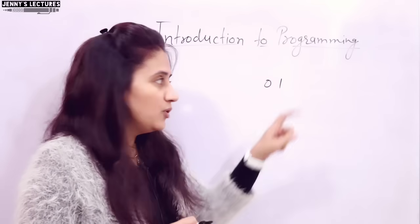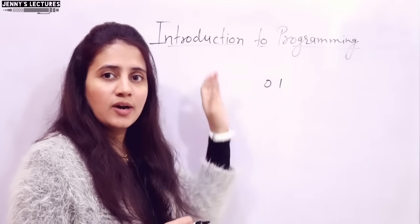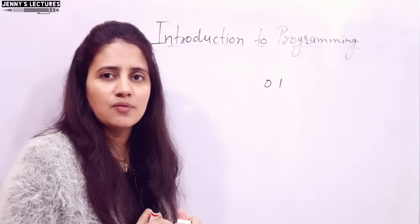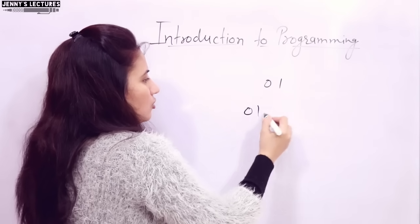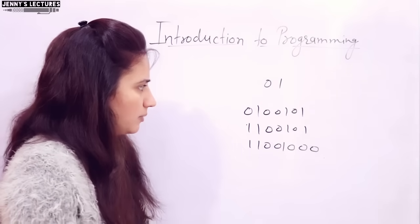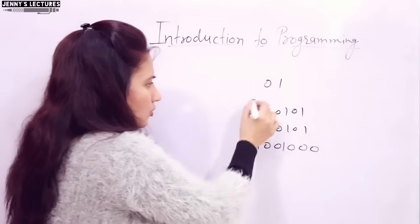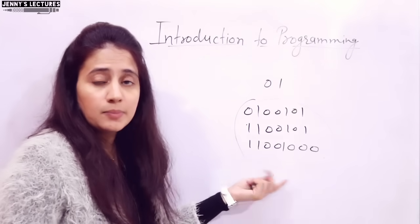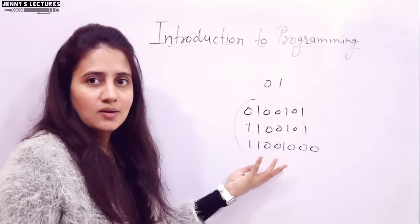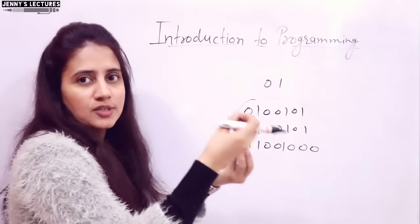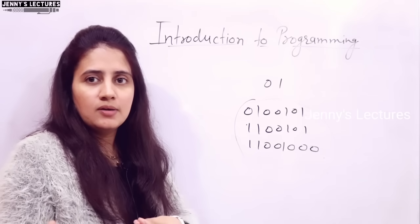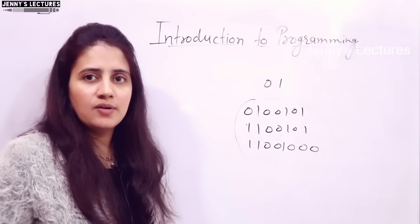The point is that the computer can understand only zeros and ones, but when we write in C language, we are not writing bunches of zeros and ones. We write things like: hash include stdio.h, hash include conio.h, void main, int a, int b, printf, scanf, and so on. We cannot understand what a bunch of zeros and ones means, but the computer can.